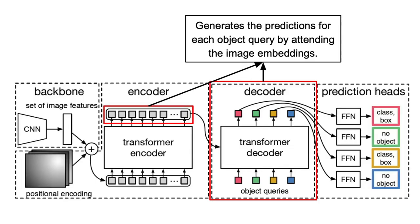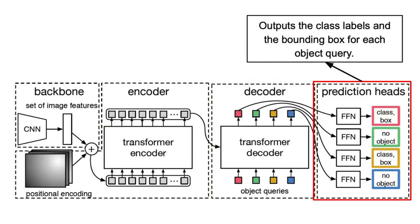For each object query, the decoder predicts five values by attending to the visual representations produced by the encoder, in the same way as in the original transformer architecture. The predicted outputs are the class label and the coordinates of the bounding box. I won't cover the attention mechanism here because I've already covered it in another video — the link is in the description if you want to find out how it's done or to refresh your mind.